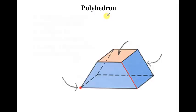These are types of solid figures we'll be studying. Now a polyhedron is something made up of polygons that we call faces.